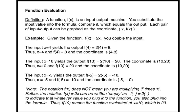For example, given the function f(x) = 2x, you simply double the input. For instance, the input x = 4 yields the output f(4) = 2(4) = 8. Thus, x = 4 is the input and f = 8 is the output, and the coordinate is (4, 8).